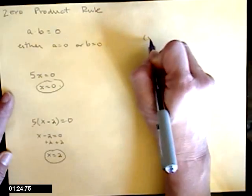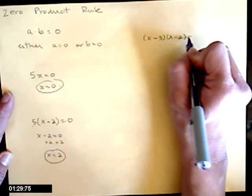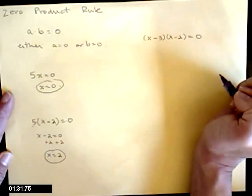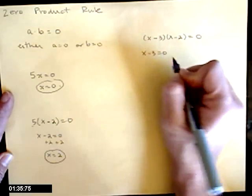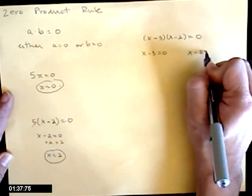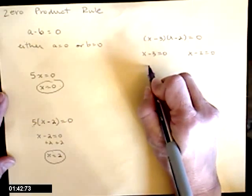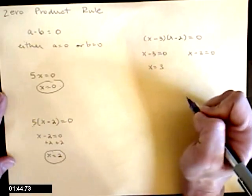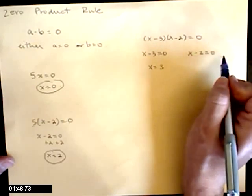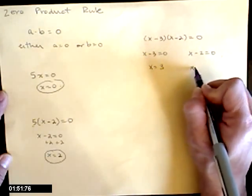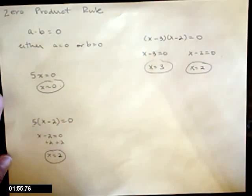What if I had x minus 3 times x minus 2 equals zero? In this case, either the x minus 3 equals zero or the x minus 2 could equal zero. If the x minus 3 equals zero, that leads us to x equals 3, add 3 to both sides. If the x minus 2 is the factor that got us to zero, x equals 2 is the value that makes that true.